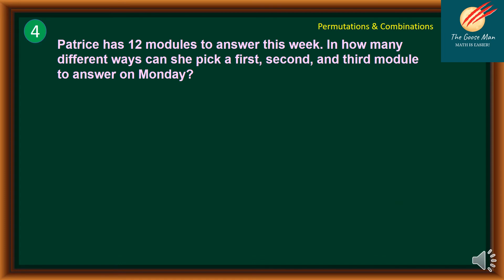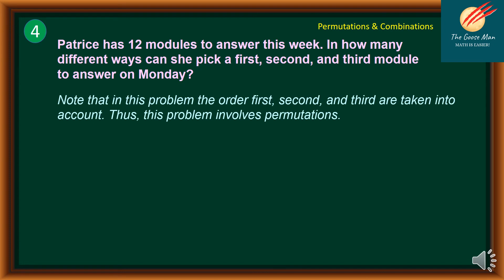Let's consider problem number 4. Patrice has 12 modules to answer this week. In how many ways can she pick the first, second, and third module to answer on Monday? Since the order — first, second, and third — is taken into account, this problem involves permutations. Our n is equal to 12 and r is equal to 3, so we take 3 modules at a time out of 12.